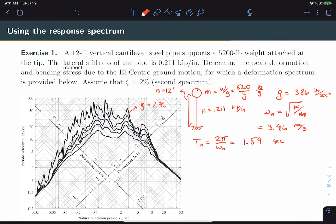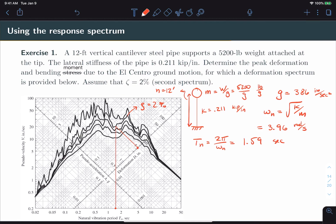All right, so we find 1.59 on our horizontal axis. We project that up to the 2% damping curve. And we get D from the positive diagonal axis. So, that is approximately 5 inches.